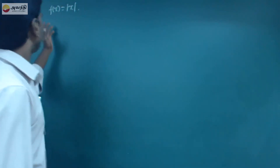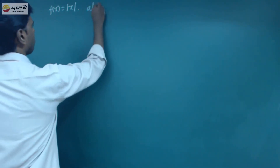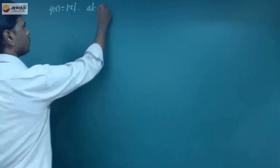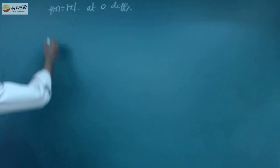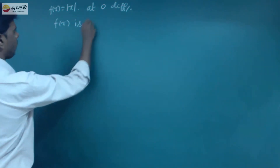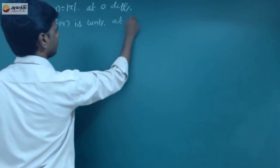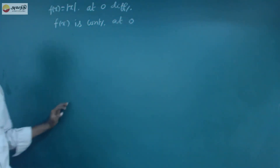Next, second case: f(x) = |x|. At x = 0, that is the origin, this function is not differentiable — we will check it out. So f(x) = |x| is a continuous function; it is continuous at 0. The 0 point is always continuous. But we will check whether it is differentiable.